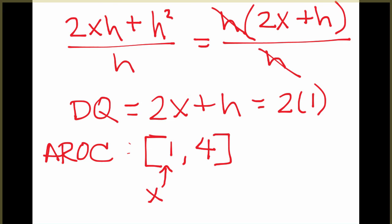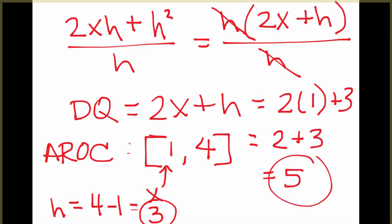So the way to find the h will be to take 4 minus 1, which is 3. And so we can substitute in the x of 1 and h of 3 into our difference quotient formula. And we know that now the average rate of change on this interval from 1 to 4 is 5.